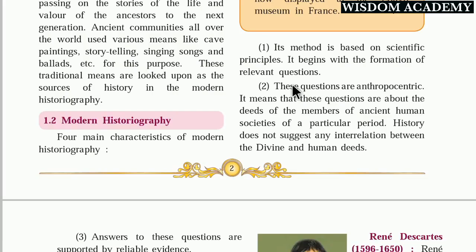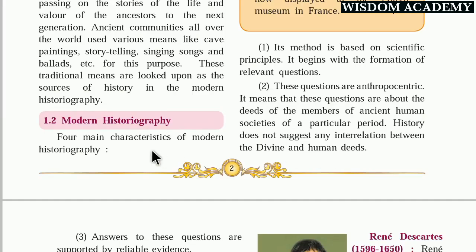These questions are anthropocentric. Anthropology is the social science that studies human life — the existence and origin of human beings. Whenever we study history, we study the life of human beings. That approach is called the anthropocentric approach. It means these questions are about the deeds of the members of ancient human society in a particular period.